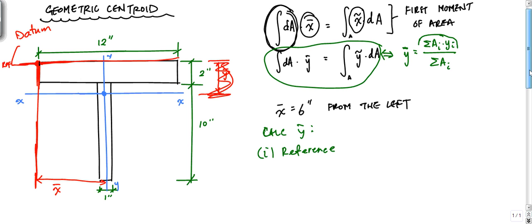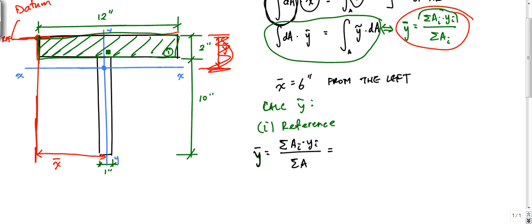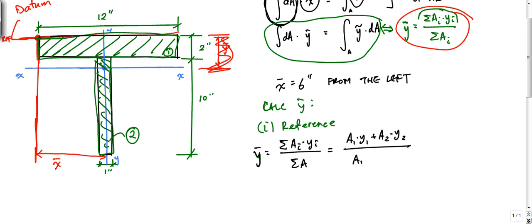Now I'll apply the equation: y-bar equals the sum of Ai times Yi divided by the total area. I'm going to break up this T-shape cross-section into two areas. Area one is the top rectangle, and area two is the vertical stem. So this becomes A1 times y1 plus A2 times y2, divided by A1 plus A2.